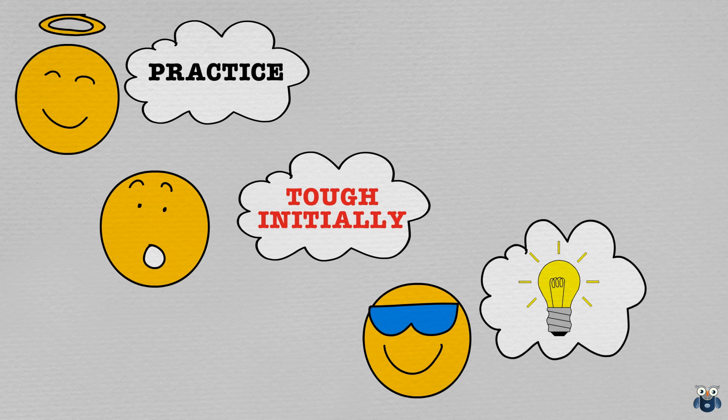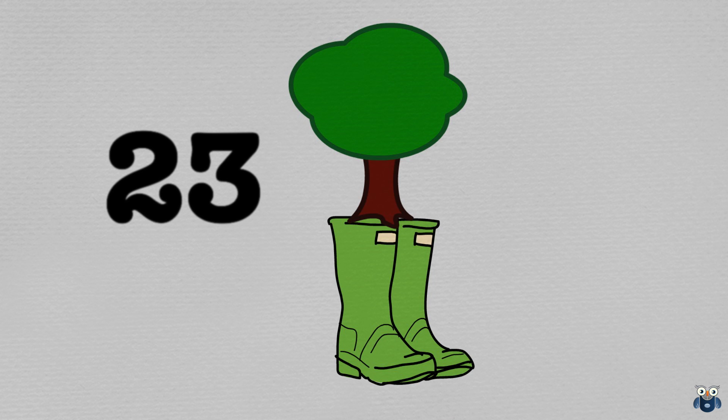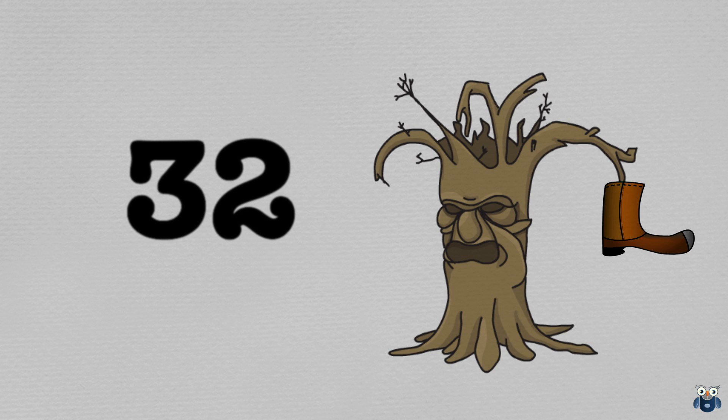I also found it fun to create these crazy stories with my images. I also began to create patterns. So 23 automatically reminds me of a shoe with a tree growing out of it. And 32 of a tree that is growing shoes instead of fruit. I can also remember numbers seen a few days back, which is great. This method, however, needs practice and lots of it. But the rewards make it all worthwhile.